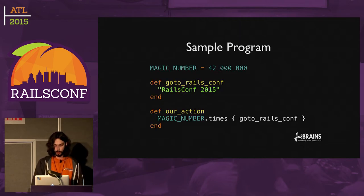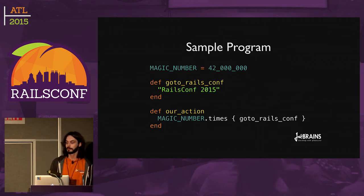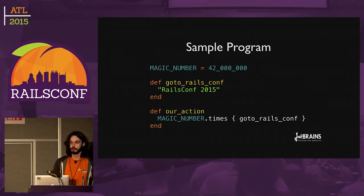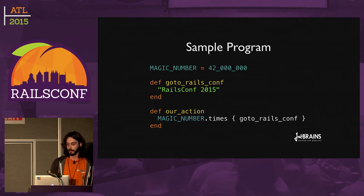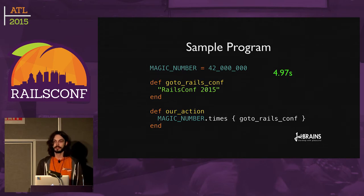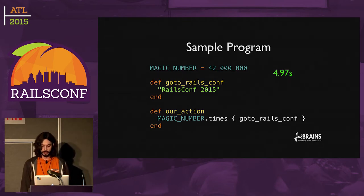So here's our really simple, really small program with lots of iterations. To set the benchmarking baseline, I'll need to run it without any debugging API enabled. And on my machine, it takes about five seconds. Not bad.